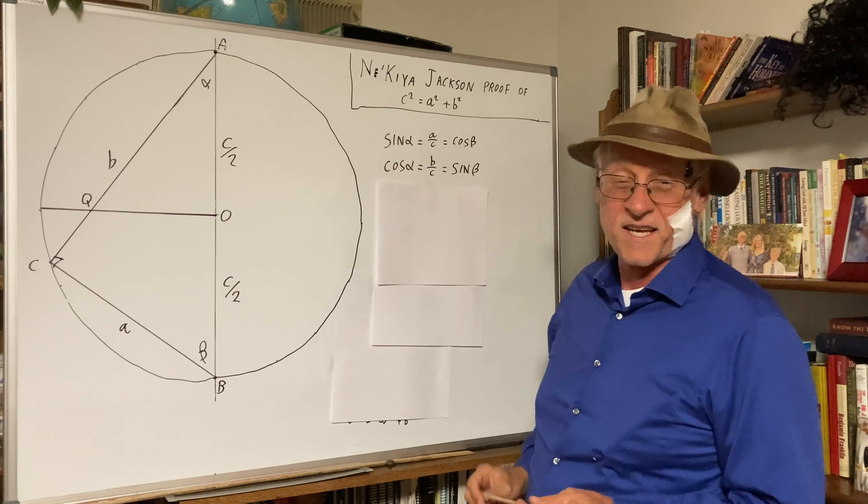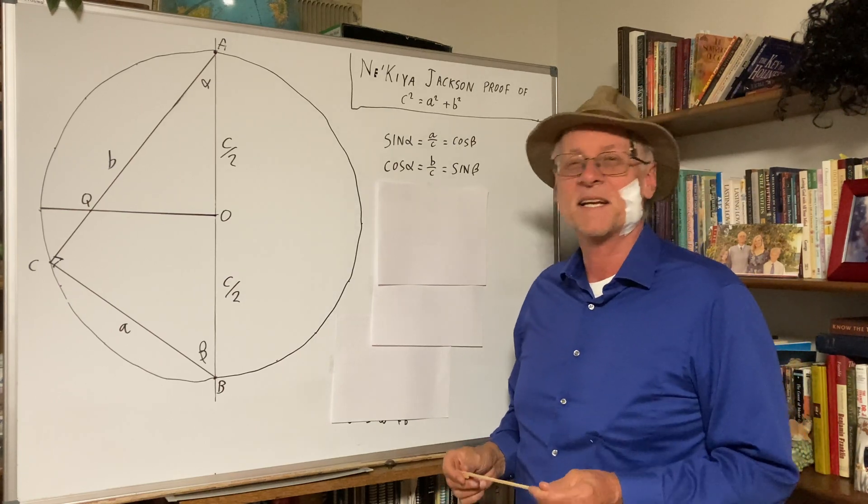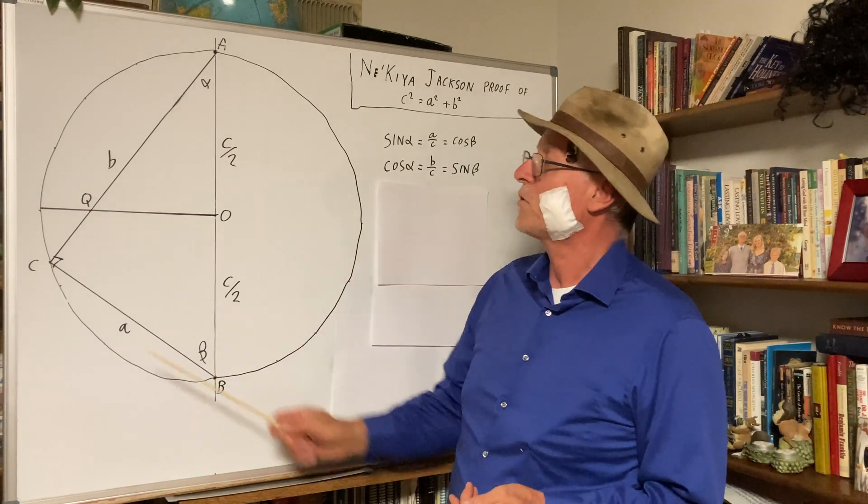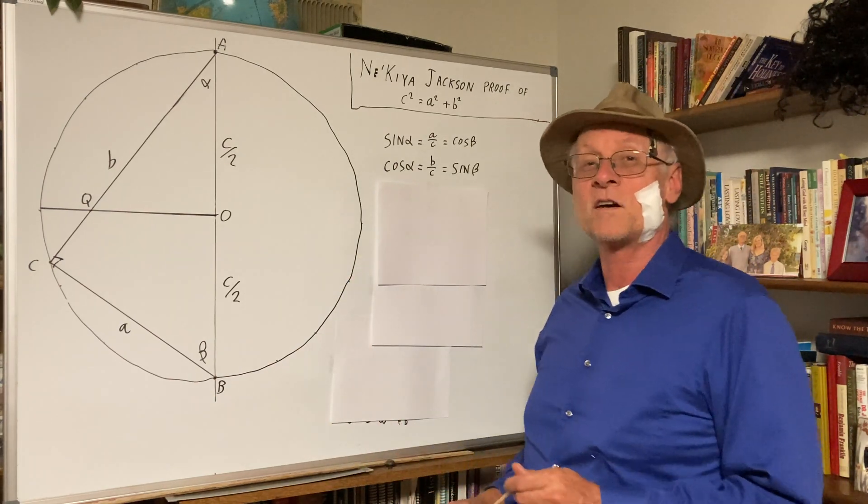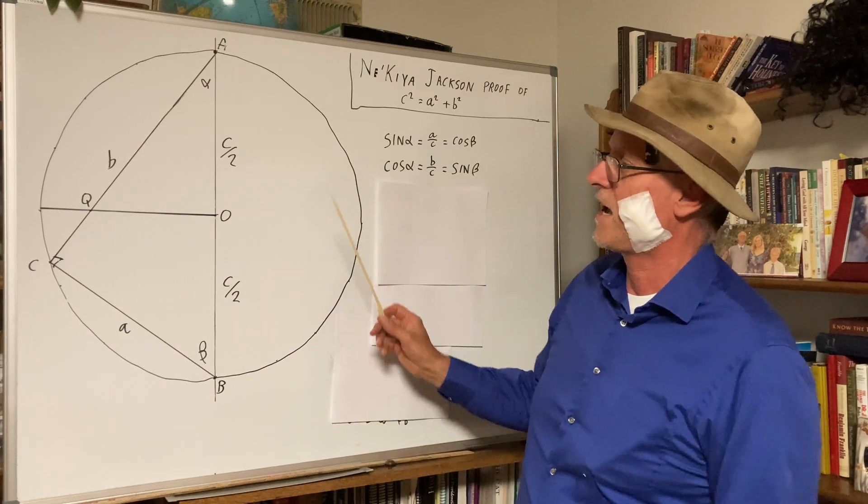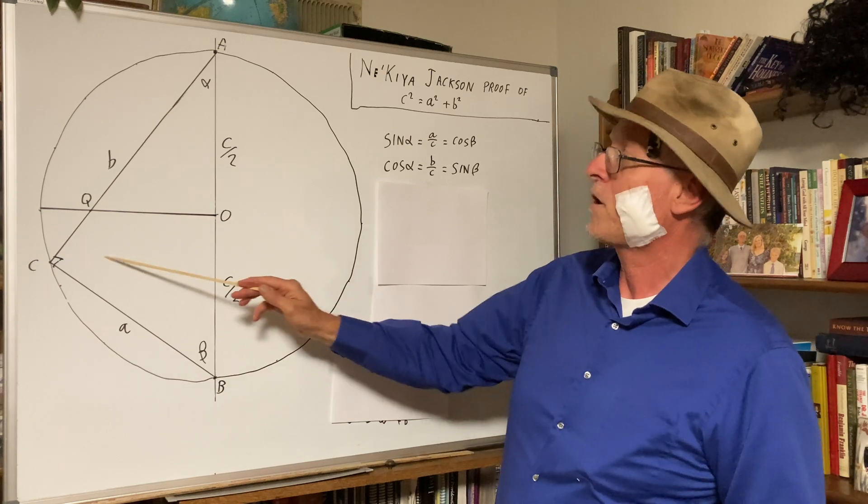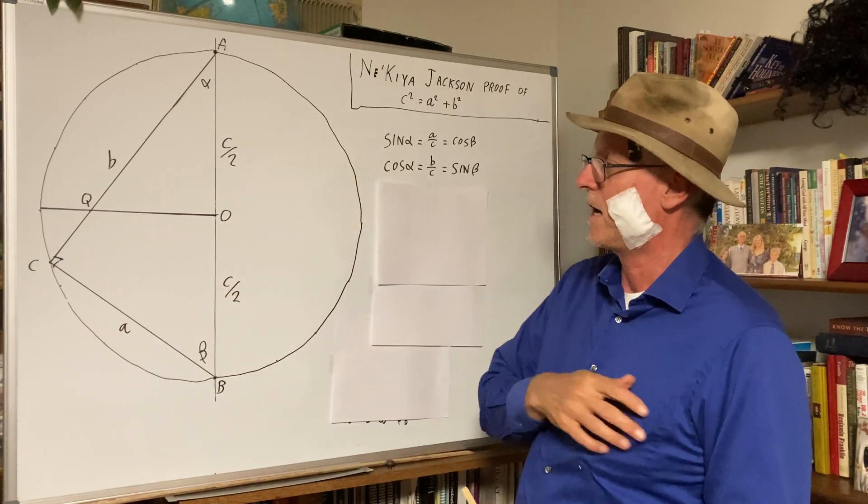I watched a video on 60 Minutes and essentially this is the proof. It's known as the circle proof because what you have is a circle and inside is a right triangle that is inscribed.